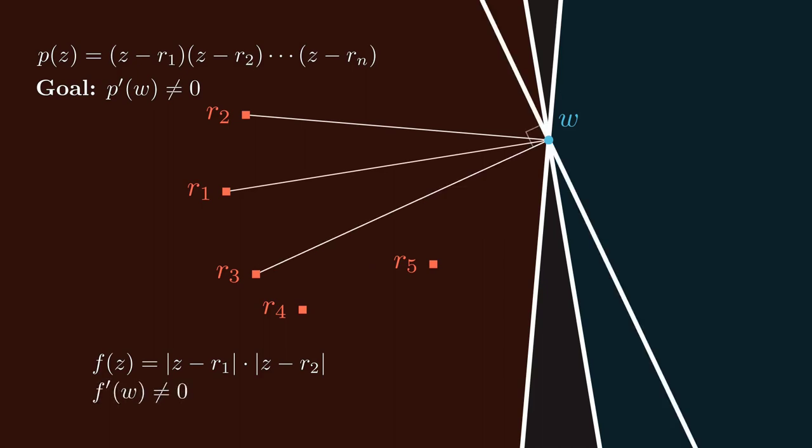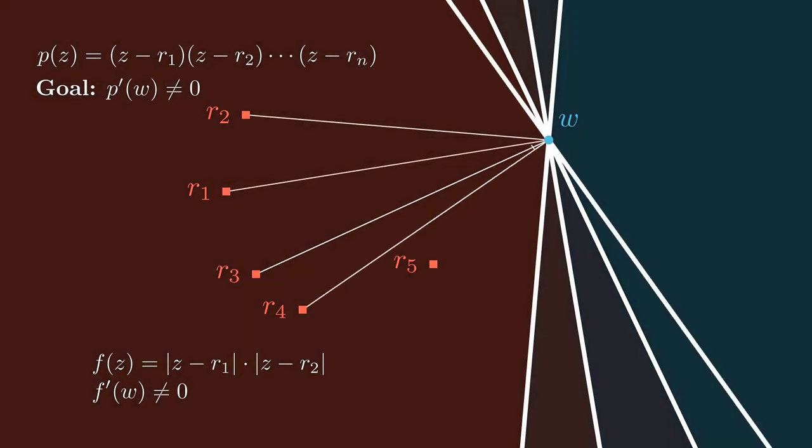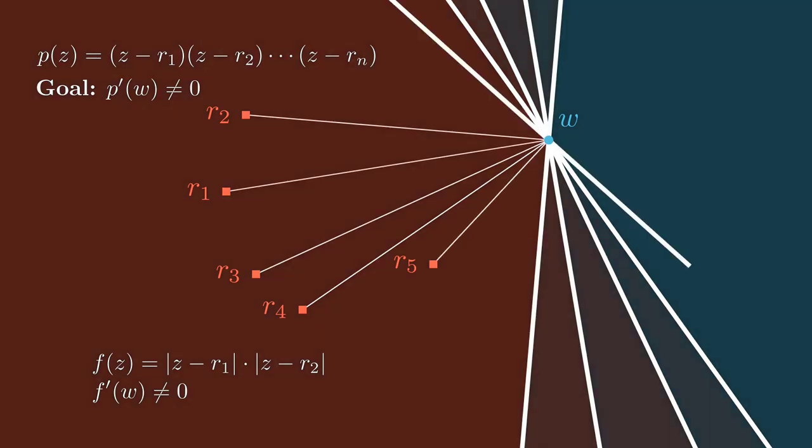Now I can do the same kind of game with the point r3, with the point r4, with the point r5. I'm drawing a line segment from the root to the point w, dropping those perpendiculars and intersecting all of the half spaces. And then I consider a helper function f, which is now just the product of the distances from its input to all of the roots.